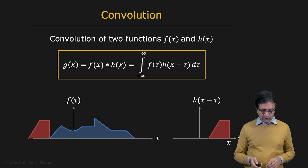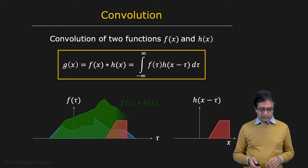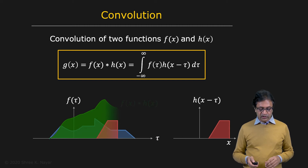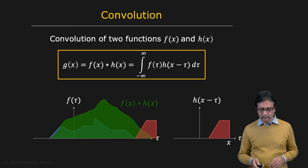So watch what happens here — you slide it, do the product and the integral at each point, and you get a result. Let's do that one more time: you slide it and you get the function g of x. That is the convolution.